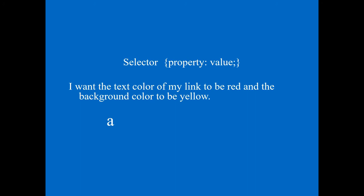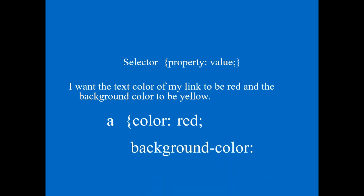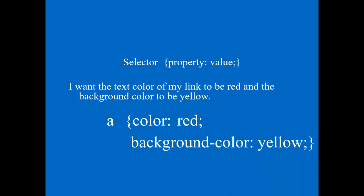Here is one more example — for an anchor tag (link), I write: a { color: red; background-color: yellow; } The output shows the link with red text color and a yellow background. So this is an example of using both color and background-color with CSS. I think in this video you got the basic idea of what CSS is, what it is used for, and its different parts. I will discuss more CSS topics in the next video. Thanks for your patience.